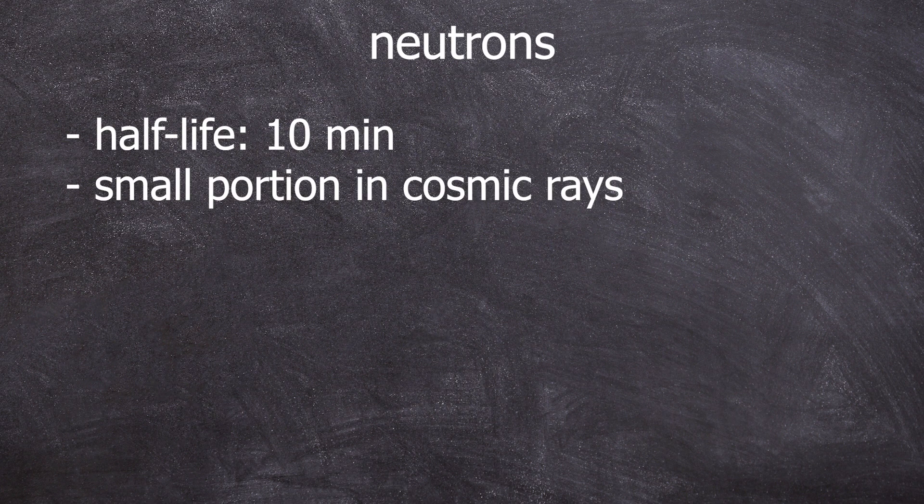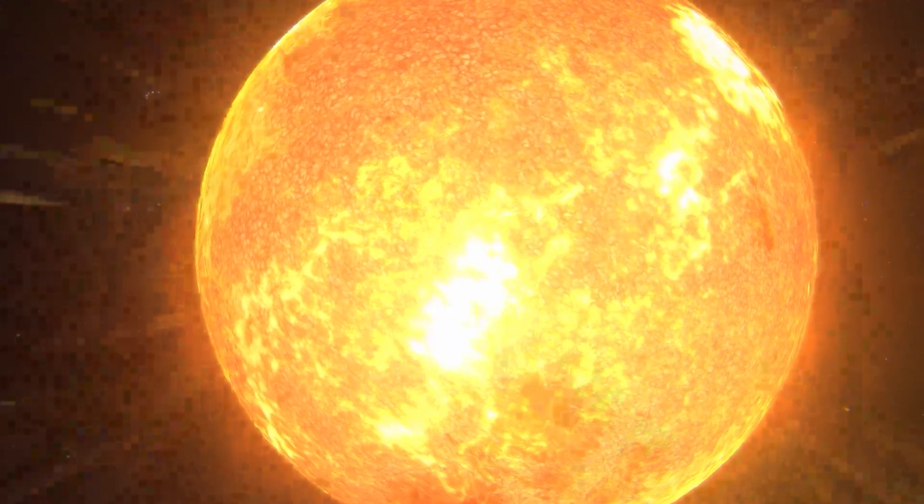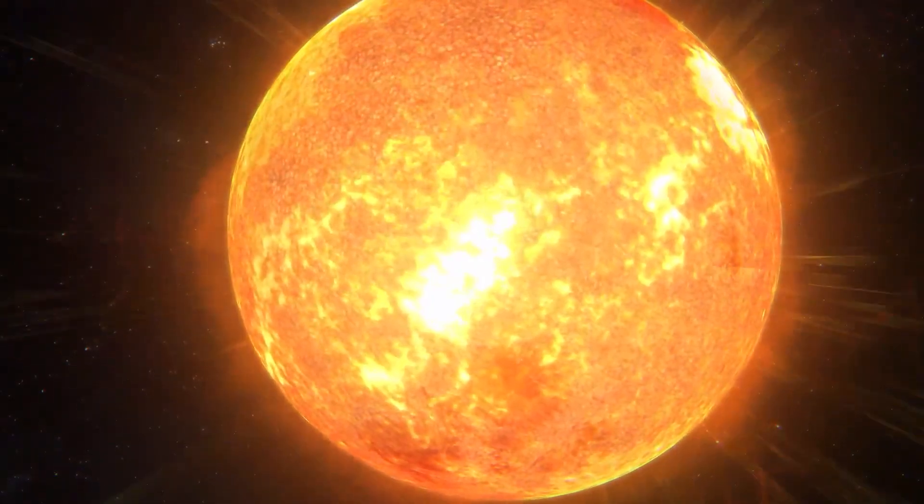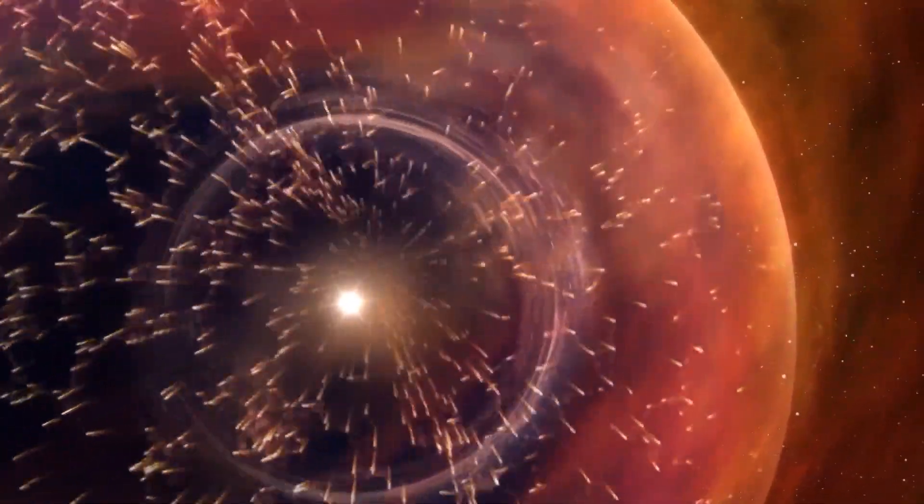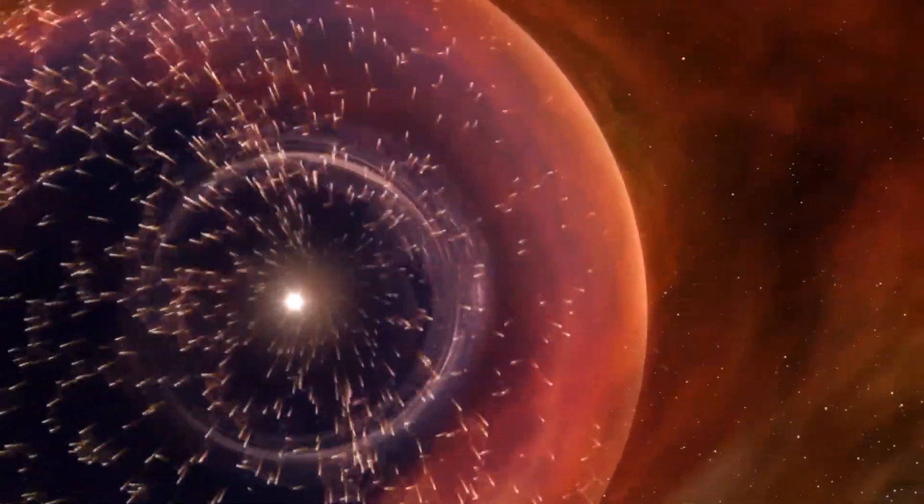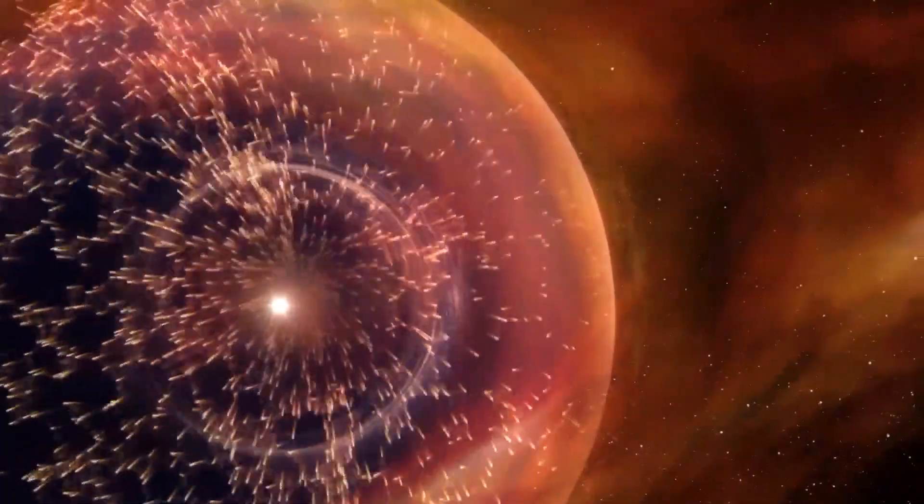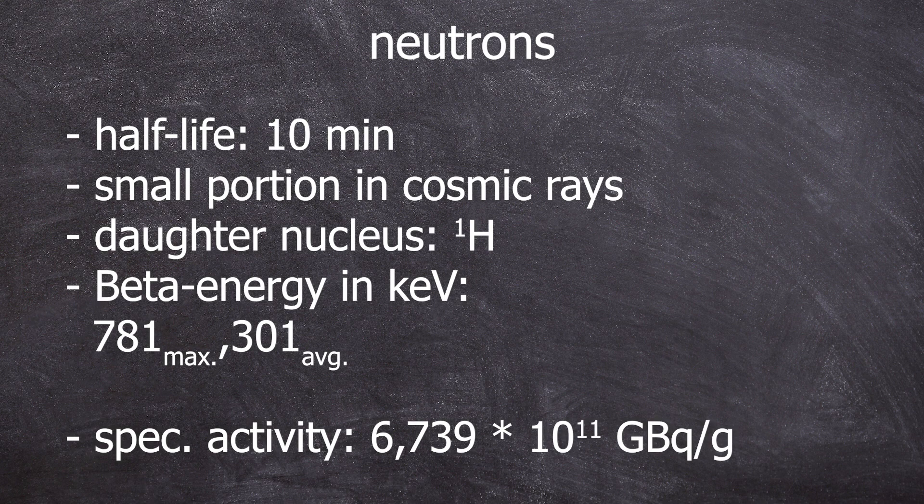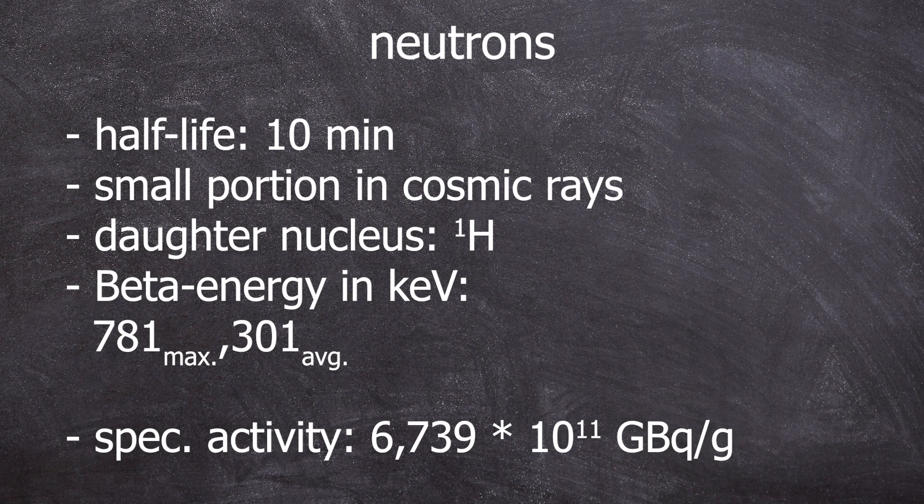More facts about neutrons. Free neutrons have a half-life of 10 minutes. That's also why cosmic radiation never consists of primary neutrons. Even though the sun, as a fusion reactor, emits extremely many neutrons, they all decay into protons via beta minus decay due to their half-life on their way to the earth. Some of these newly formed protons will definitely absorb the 781 kilovolt betas to form hydrogen, but that doesn't happen that regularly. Only in small parts. The specific activity is 6.739 times 10 to the power of 11 gigabecquerels per gram. That's a piece of information that hopefully never finds real-world applications.